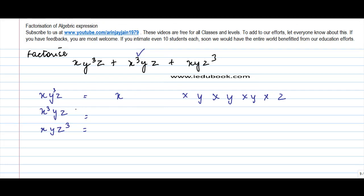Similarly, x³·y·z will be written as x·x·x, then y — y is only one power so nothing goes in the other spaces — into z. Then x·y·z³: x comes only once, y comes only once, and z expands into z·z·z, which is z cube.